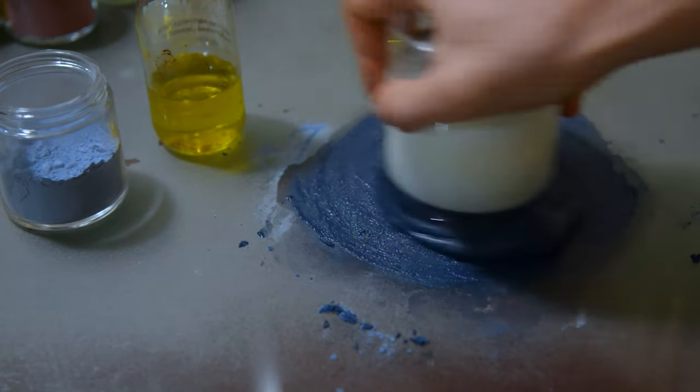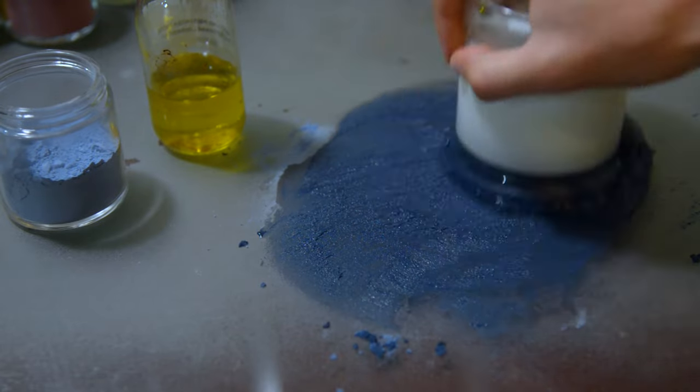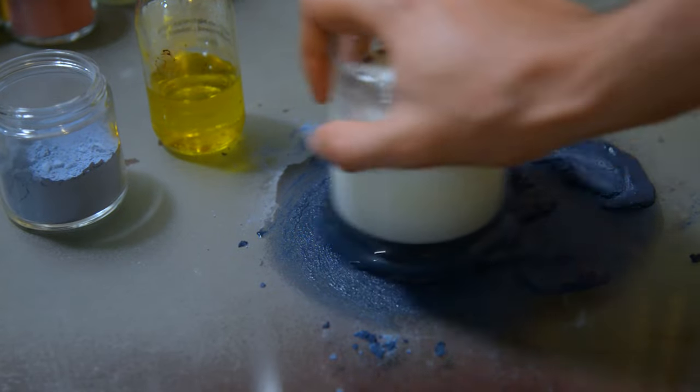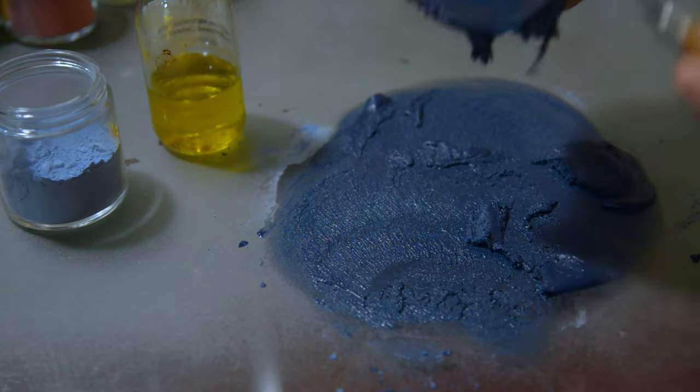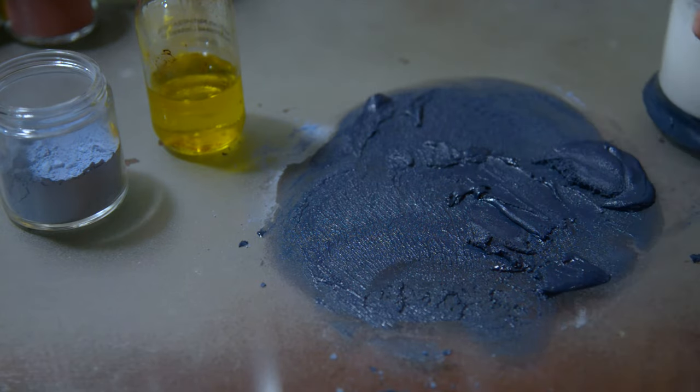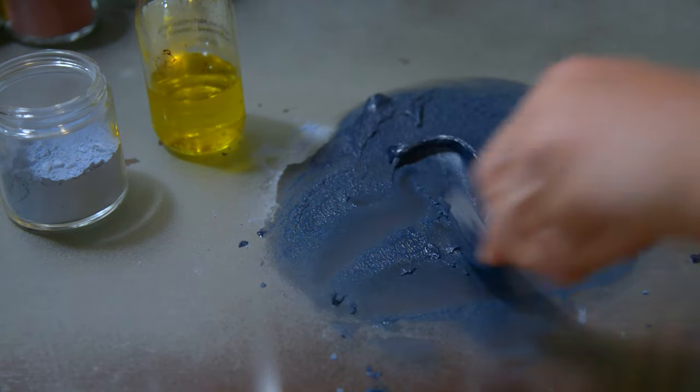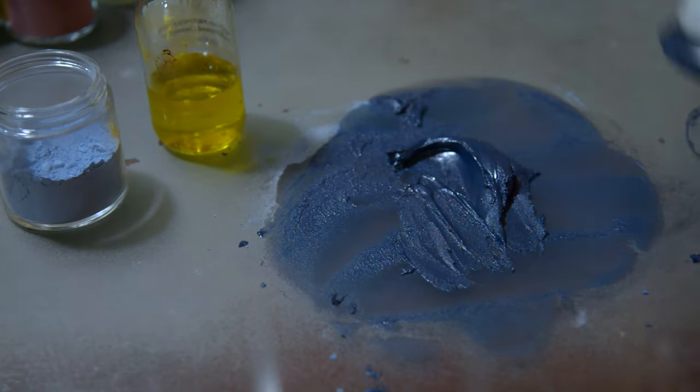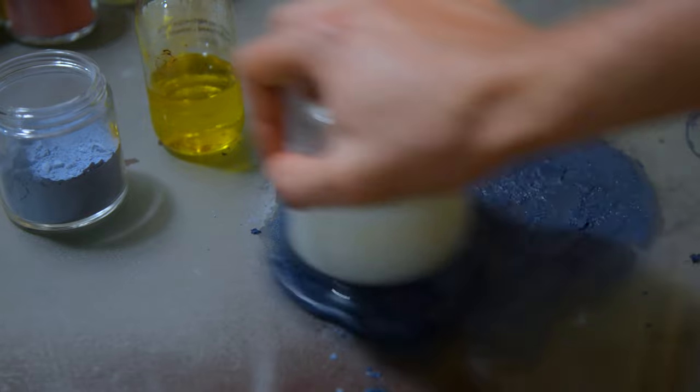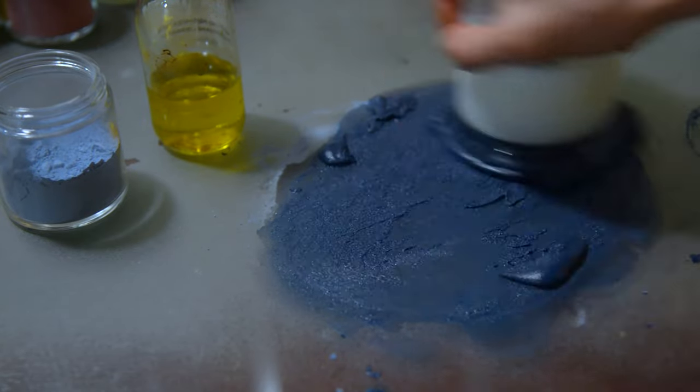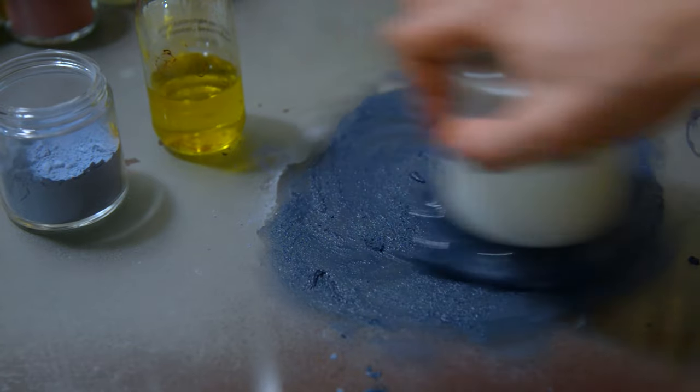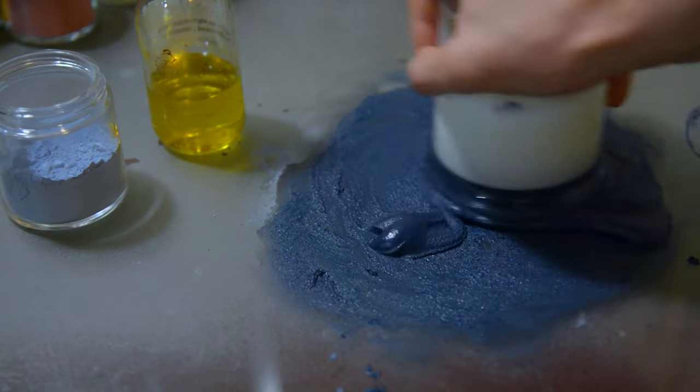This part of the process is really satisfying, and it just takes some time to really start loosening up the paint. Once the paint starts building up on the actual muller, I take my palette knife and I just turn it over and scrape off some of it, and take the rest of the paint and move it back into the center of the pile where I can continue mulling it. It's at this point that I begin to feel the paint changing into a more smoother texture, and I can adapt to this. If it's too oily I can add some more pigment, and if it's too dry and cakey still, I can add a little bit more oil to balance it out.